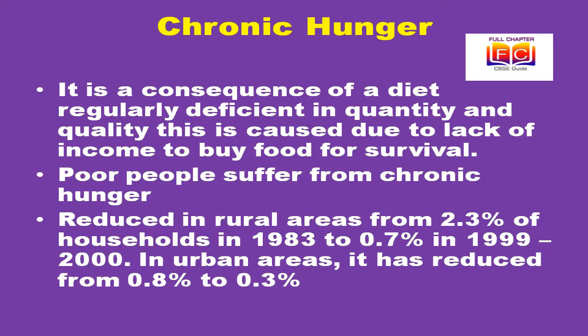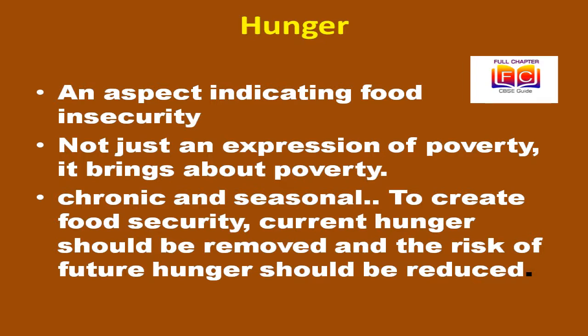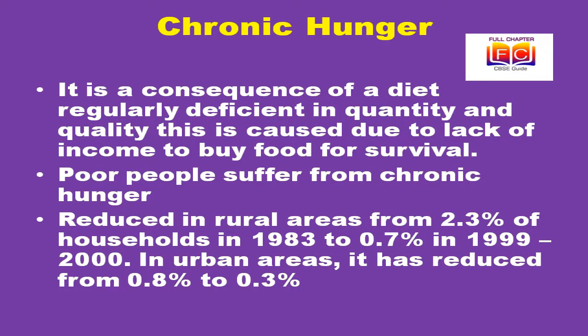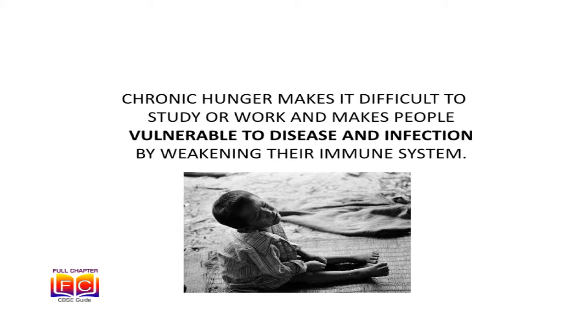Chronic hunger is a consequence of a diet regularly deficient in quantity and quality, caused by lack of income to buy food for survival. Poor people suffer from chronic hunger because of their very low income and resulting inability to buy food. Chronic hunger has reduced in rural areas from 2.3% of households in 1983 to 0.7% in 1999, and in urban areas from 0.8% to 0.3% during the same period.